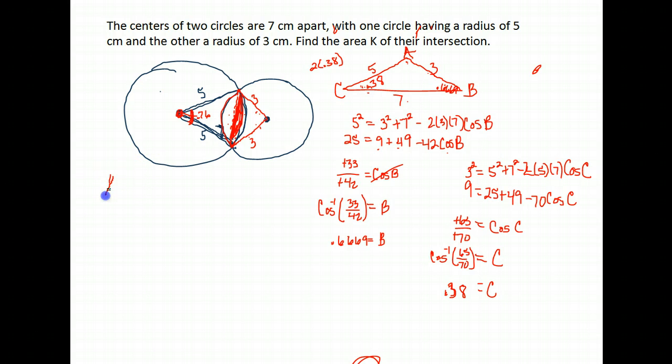The area of a segment is 1 half the radius squared times theta minus the sine of theta for your central angle. So for this one it would be 1 half times the radius of 5 squared times 0.76 minus the sine of 0.76. 5 squared is 25, divide by 2 we get 12.5, and 0.76 minus the sine of 0.76 gives me 0.07107. Times 12.5, for this section I get 0.888 as the area of the segment there.